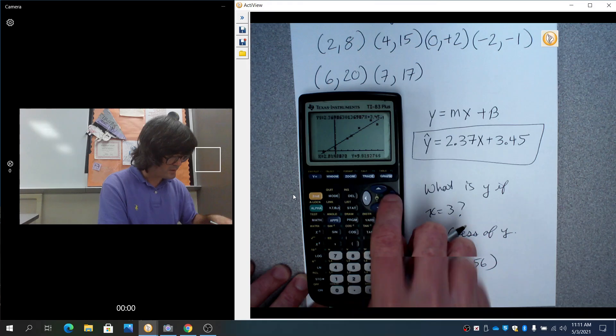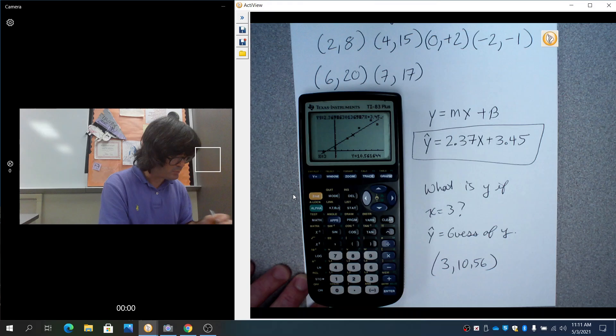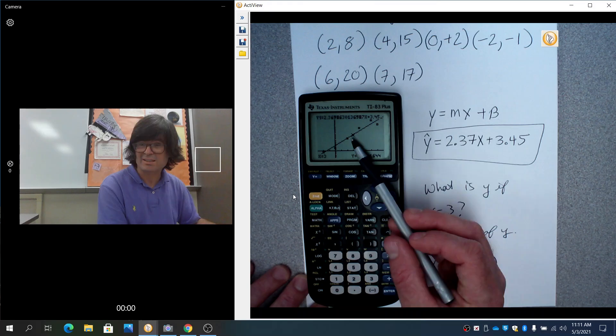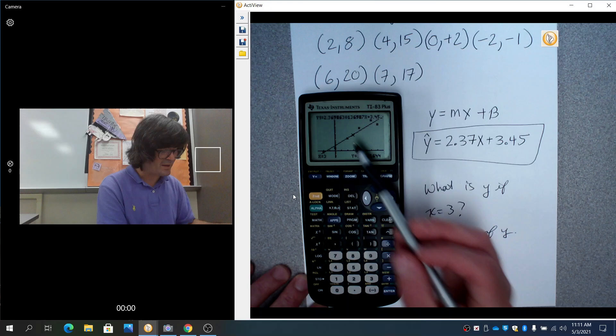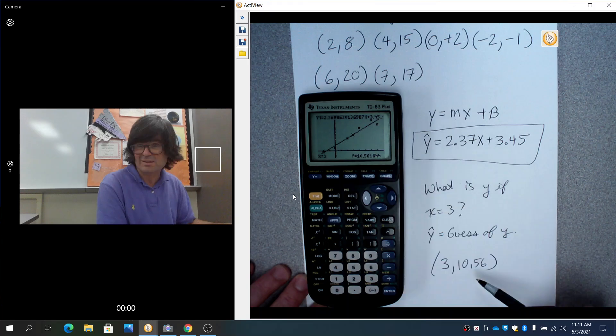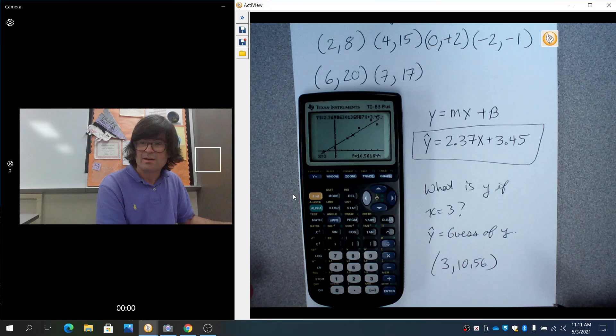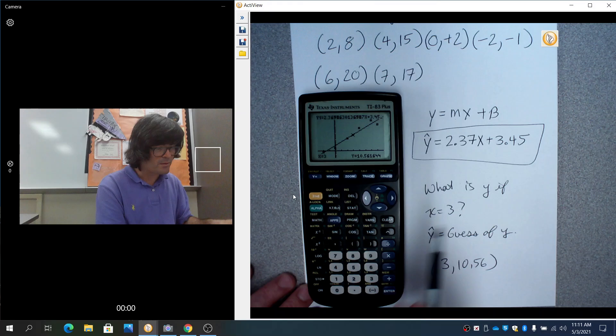Let's see how it looks. If you hit GRAPH, if you hit TRACE on my line and say you went to 3, there's 10.56. That just looks like a point that's right in with the rest of them, so it looks like a believable guess. If x were 3, maybe y could be 10.56. So that's how linear regression works. Doing it on the calculator, it's not that hard.